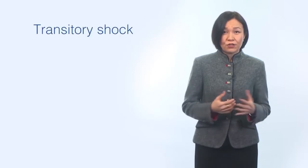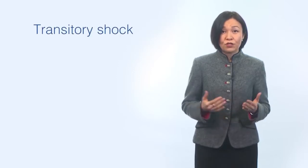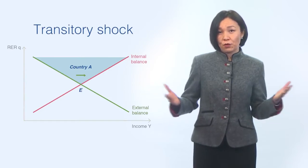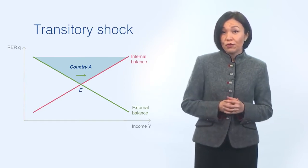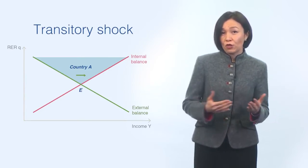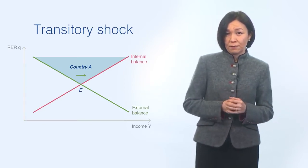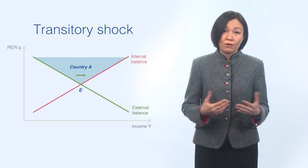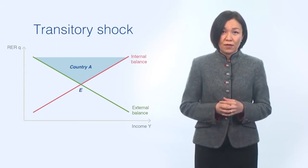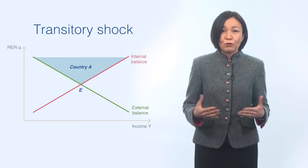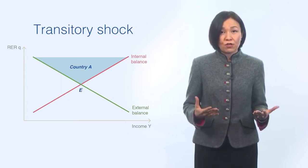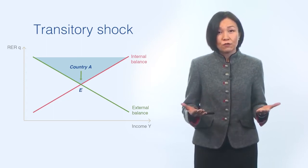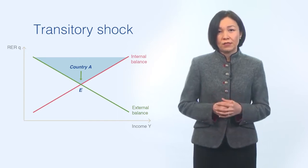If transitory and commodity prices are expected to recover, expansionary fiscal policy would be generally appropriate to support economic activity. The central bank can use reserves to support the national currency. Achieving external balance will require other measures like internal devaluation through wages, for example, to help competitiveness.